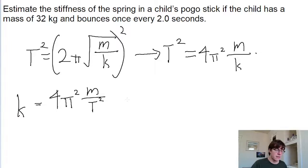Now the mass is just represented in this problem by the child's mass, and the period is, remember, however long it takes for one cycle to complete. So if the problem tells us that the kid bounces every 2 seconds, then the period is 2 seconds. So into a calculator we're going to put in 4π squared multiplied by 32 kilograms for the mass divided by 2 seconds squared for the period.